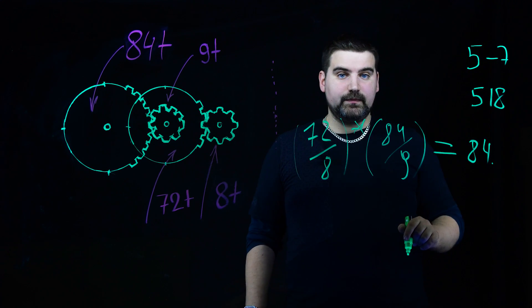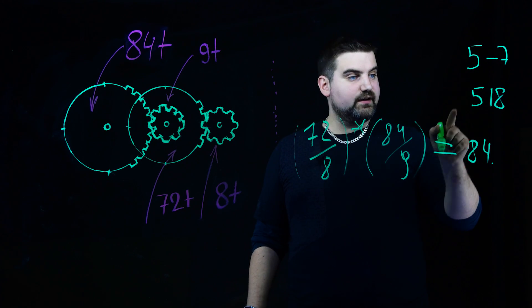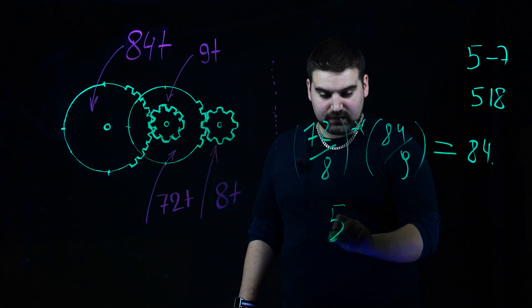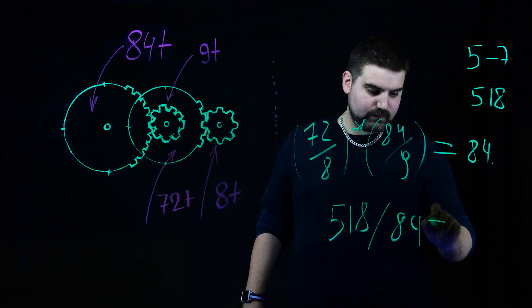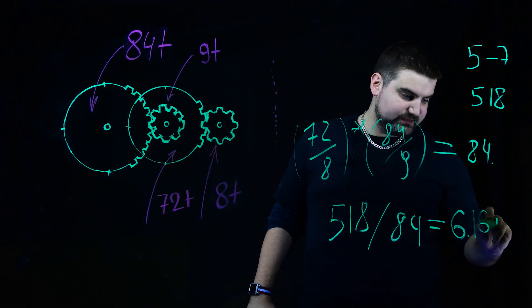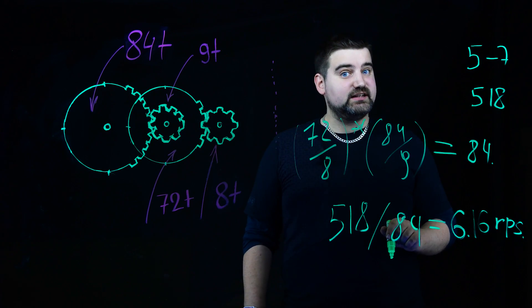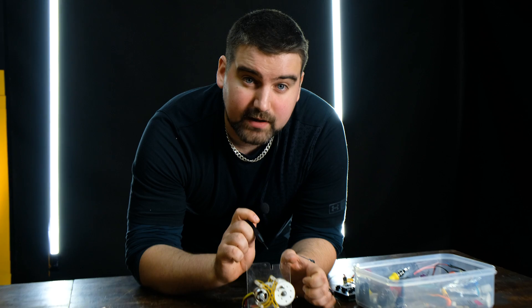It means the motor is going to rotate 84 times slower. I will divide my motor RPM ratio with this coefficient. And I will get 6.16 revolutions per second. And that is just fine. Well, now my motor with the gearbox provides about 6.16 revolutions per second.